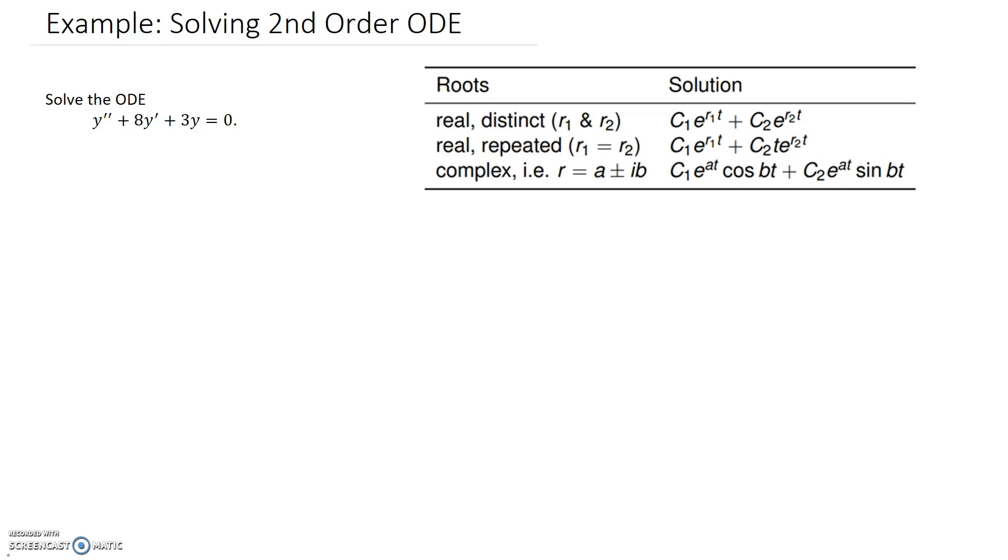So how I'm going to start this off is I'm going to get the characteristic equation associated with the system, and then from there I should be able to select which case I have and consequently which form of the solution I need to pick up.